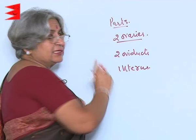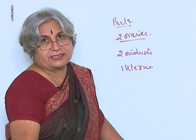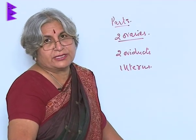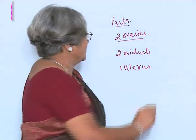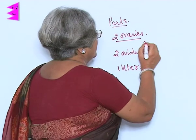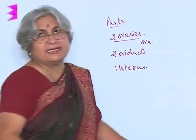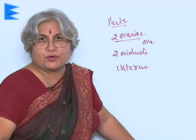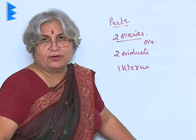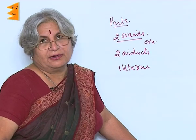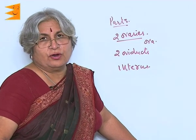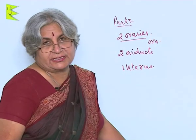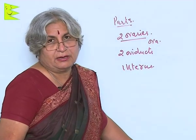The ovary is analogous to the testis — ovary produces ova, testis produces sperms. The oviduct is like the vas deferens: vas deferens transports sperms, while the oviduct transports ova. The 2 oviducts unite to form the uterus, the muscular bag.